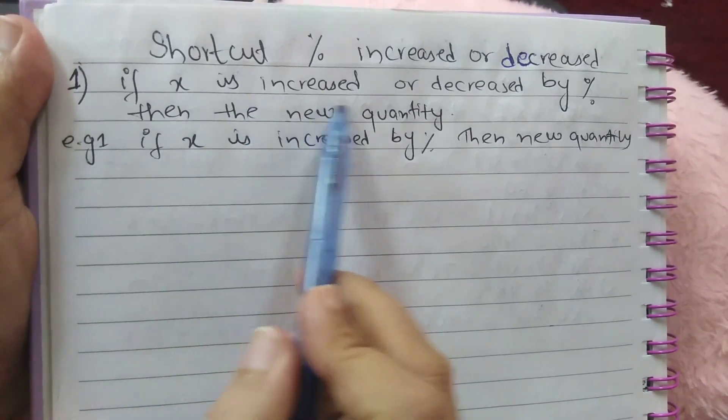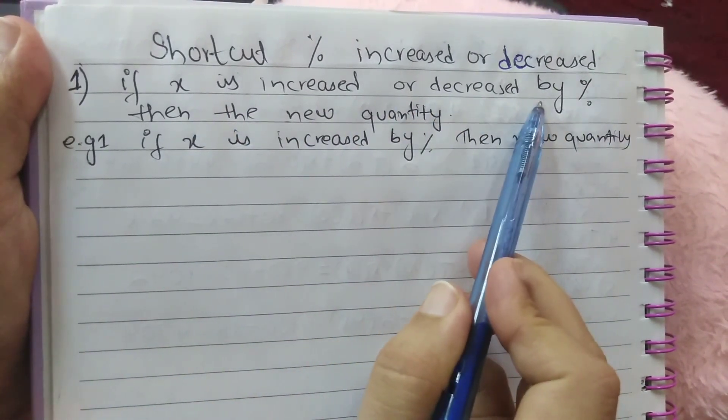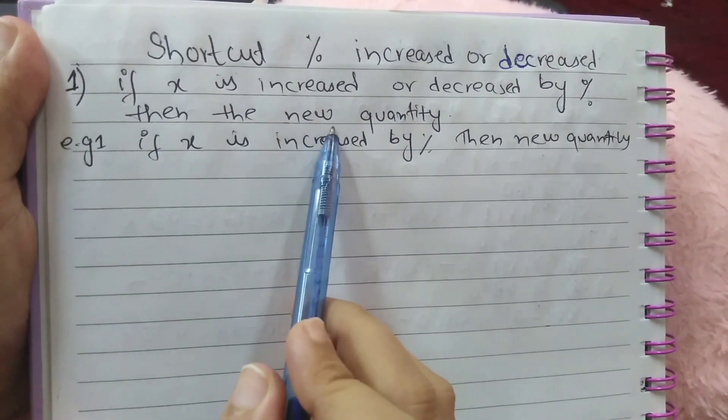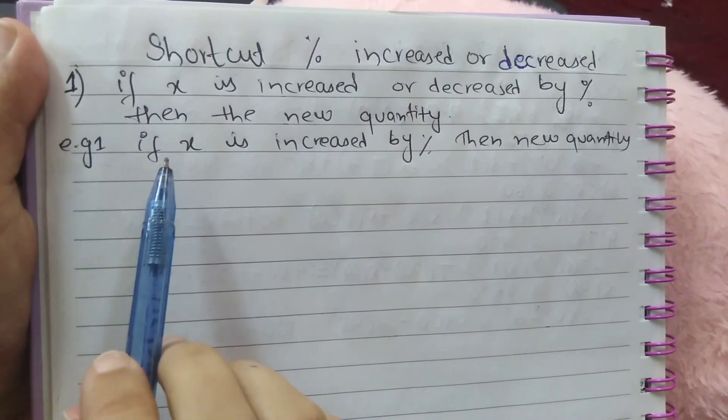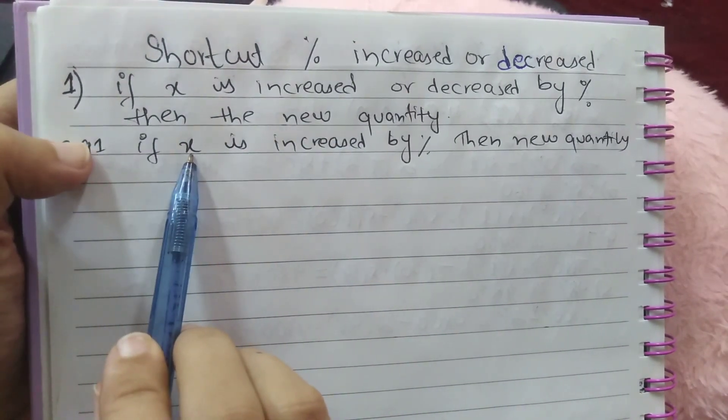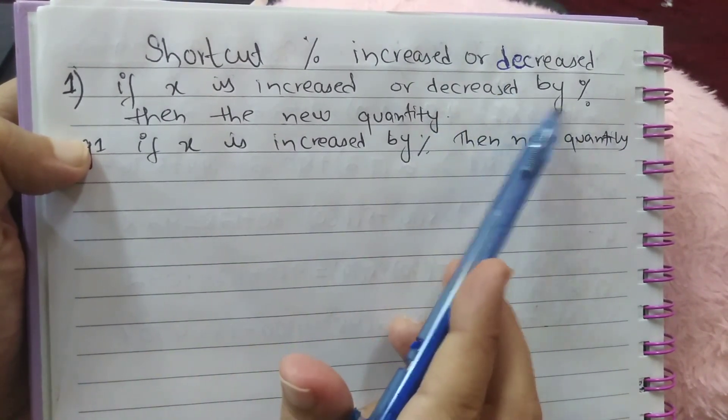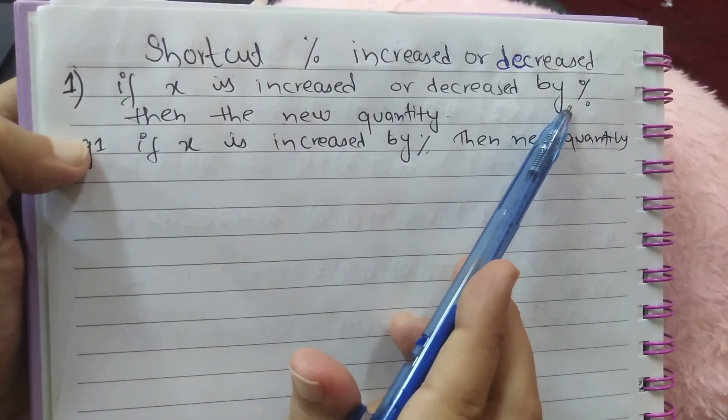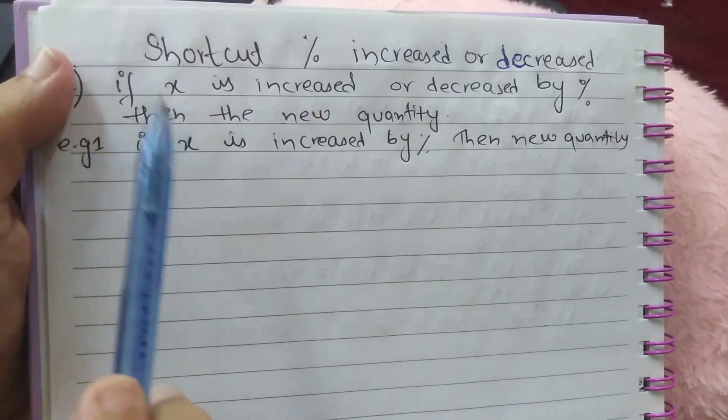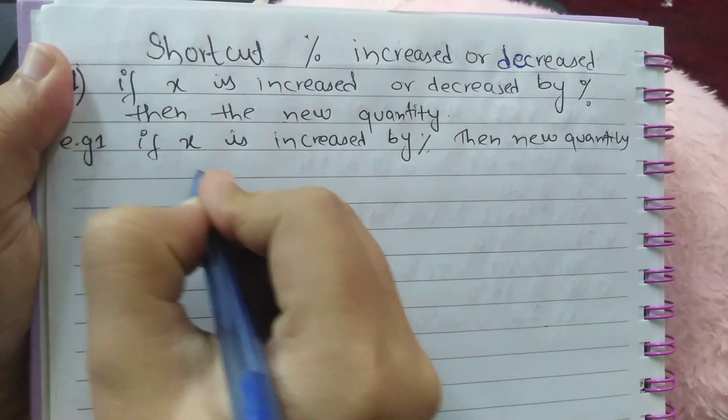So for such type of questions, X is one quantity and second quantity is decreased by or increased by given as percentage. So the formula for these type of question is first quantity is taken as X and second quantity is taken as Y.